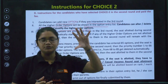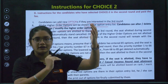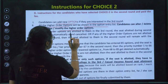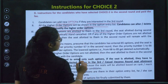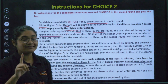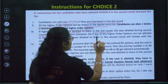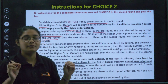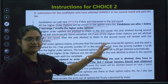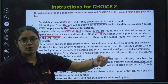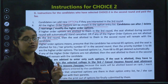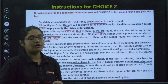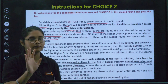The options that were there before the allotted college are your higher order options — you can modify them. If higher order options are allotted to you in the third round, the seat allotted during the second round will automatically stand cancelled. If none of the higher order options are allotted in the third round, then the seat allotted in the second round will remain with you.